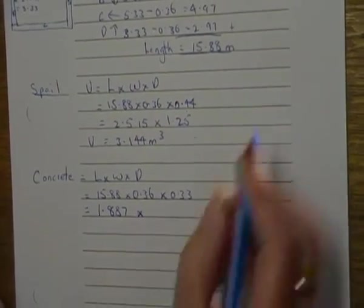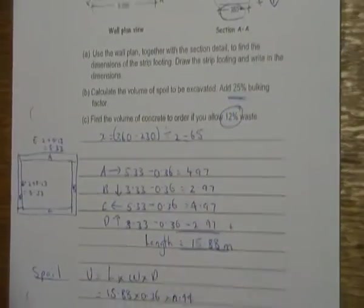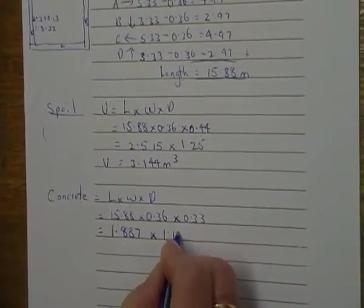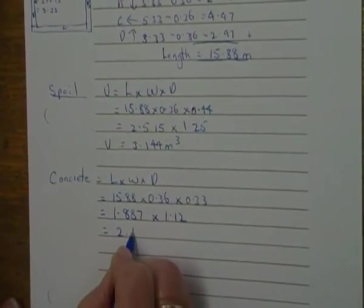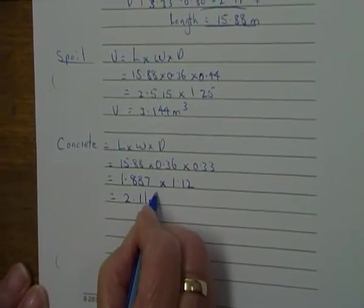We will always have waste, so it's 12%, so 1.12, and that's going to give me an answer of 2.11 metres cubed.